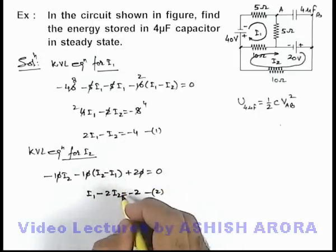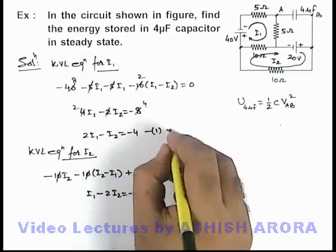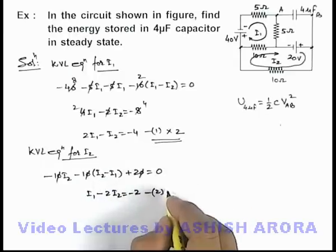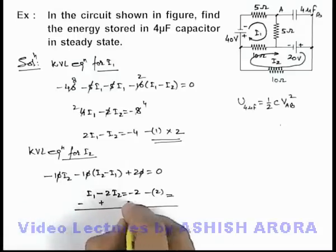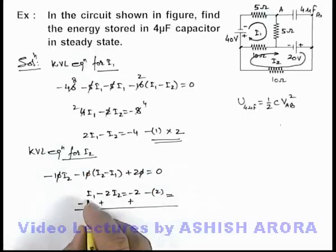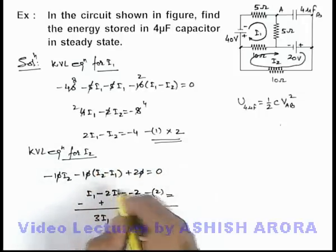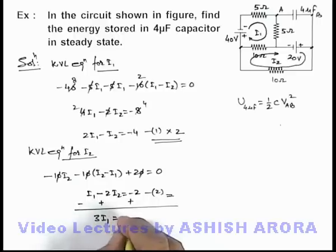From these 2 equations we are willing to calculate the value of i1. So to eliminate i2, we just multiply equation 2 by 2 and subtract from equation 1. In this situation, 2 times 2, 4i1 minus i1, we can write it as 3i1. Here minus 2i2 and plus 2i2 gets cancelled out. This will be minus 8 plus 2 equals minus 6.